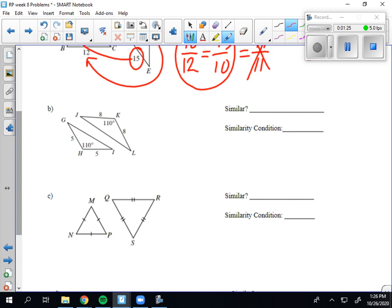Letter B. Right here they give me two sides and an angle in between, so maybe I could do side, angle, side. And it does work because 8 divided by 5 and 8 divided by 5 are equal, so that means there's the same side ratio for corresponding sides, and the angles are the same. So similar, yes, by side, angle, side.